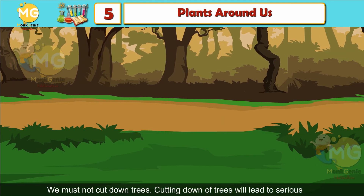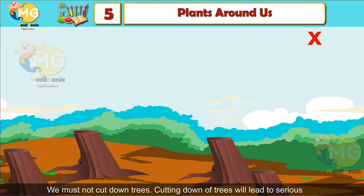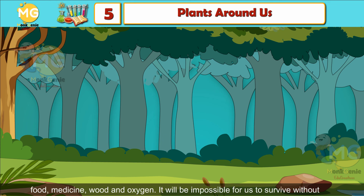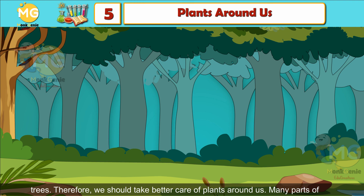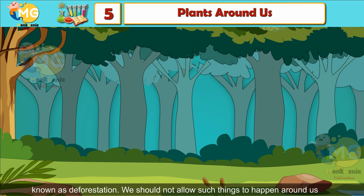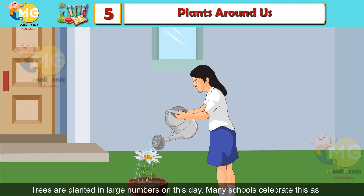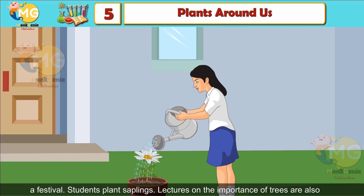We must not cut down trees. Cutting down trees leads to serious problems like pollution, drought, and flooding. Trees are the source of food, medicine, wood, and oxygen, and it would be impossible for us to survive without them. Many parts of forests are being cleared to build houses and roads — this is known as deforestation. Van Mahotsava is a program of planting trees in large numbers; many schools celebrate it as a festival, with students planting saplings and attending lectures on the importance of trees.